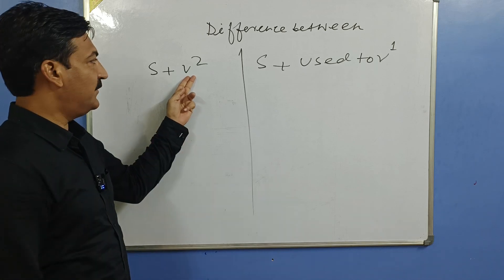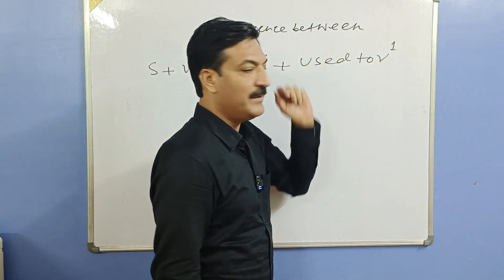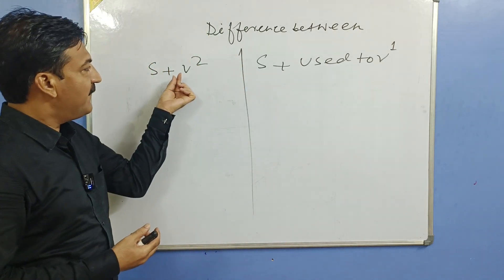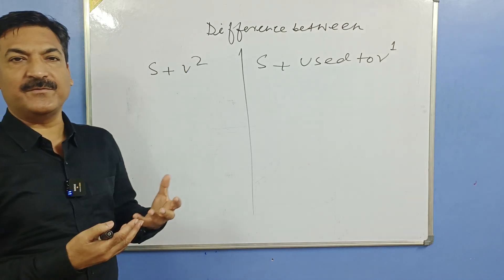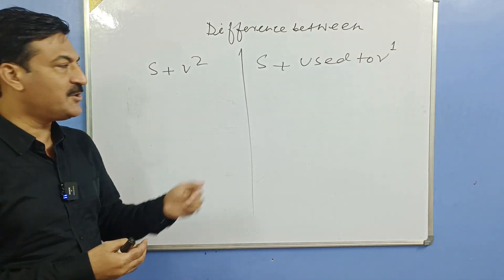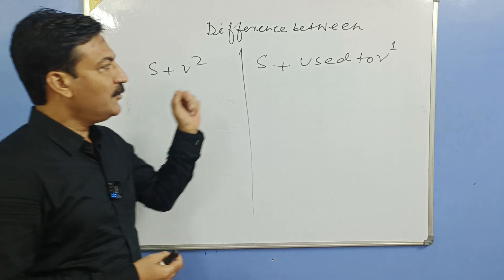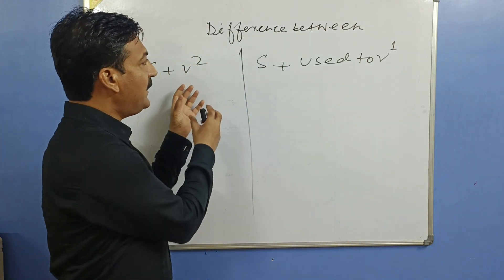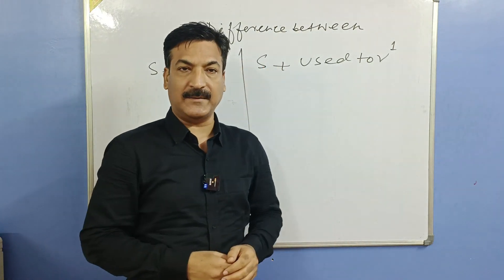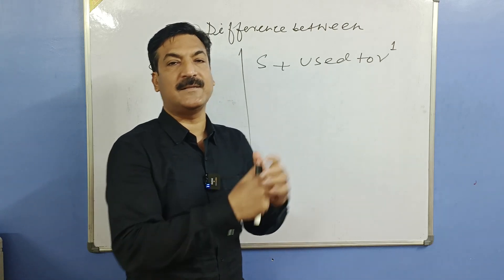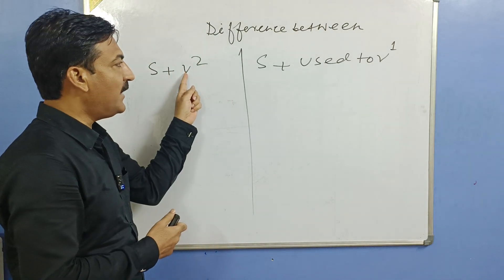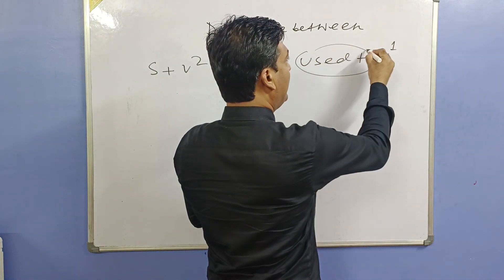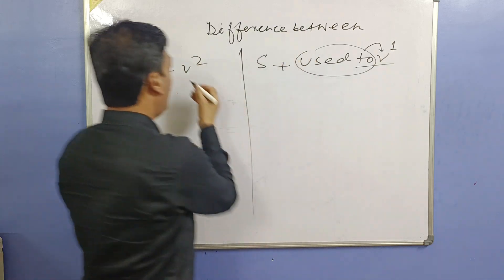V2 means the past form of a verb, and 'used to V1' — everybody knows that V2 is the past form of V1, meaning we use it when we talk about a past action. 'Used' is also the past of 'use'. The question arises: jab dono hi past action ke baare mein baat karenge, to phir dono mein antar kya hai? After 'used to', the verb comes in its first form (V1).